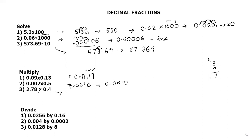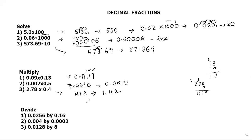Let's do one more: 2.78 × 0.4. First multiply 278 and 4. 8 × 4 = 32, carry 3; 7 × 4 = 28, plus 3 = 31, carry 3; 2 × 4 = 8, plus 3 = 11. Write 1112. Now find the decimal places: one place here and two places here — 1 + 2 = 3. Count 1, 2, 3 and put the decimal. The answer is 1.112.